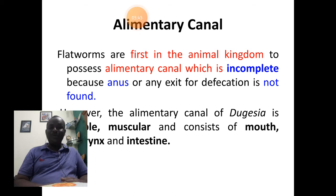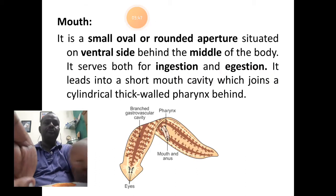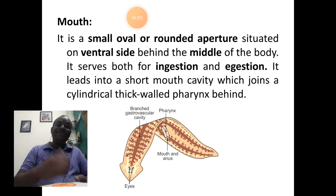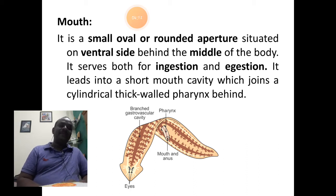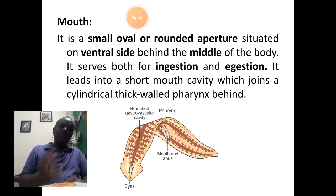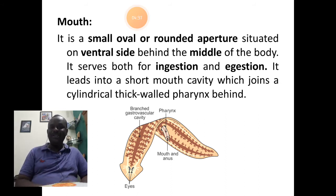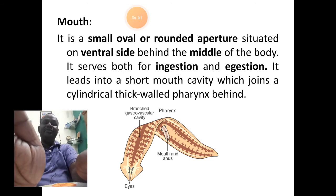The alimentary canal is said to be muscular — it is made up of muscles. The mouth is a small oval or round opening seen on the mid-ventral side of the planaria. It is the common opening for both intake of food and egestion of digestive waste. The mouth leads into a short mouth cavity, which connects behind to a cylindrical tubular pharynx.